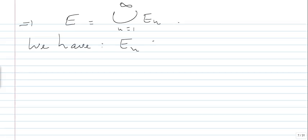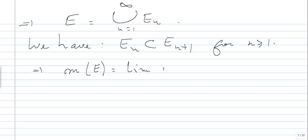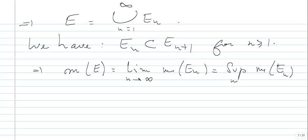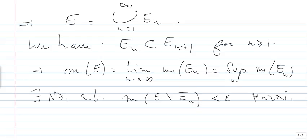The measure of E is finite, therefore the measure of the E_N's is finite. Using the properties of measure, the measure of E, which is finite, equals the limit of the measure of E_N's, which is also the supremum of the measure of E_N's. For the epsilon we picked, there exists N such that the measure of E minus E_N is less than epsilon for every N greater than capital N.